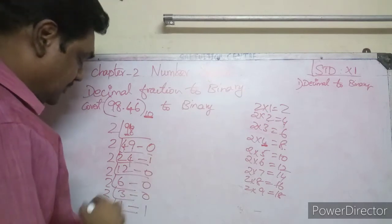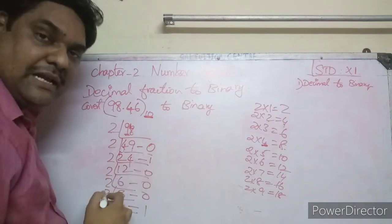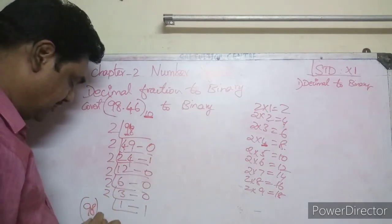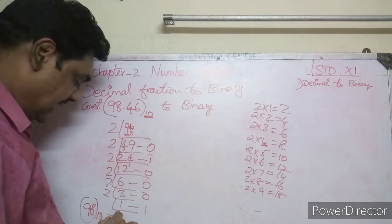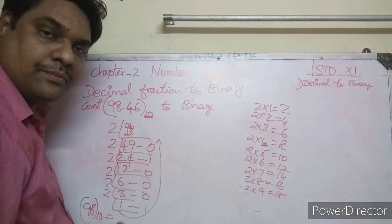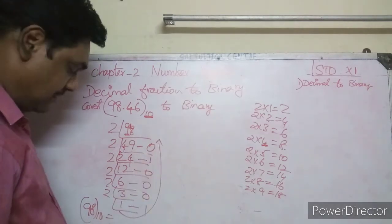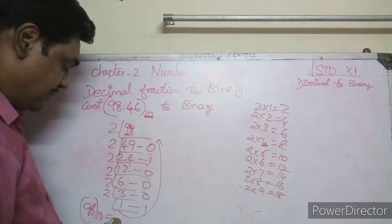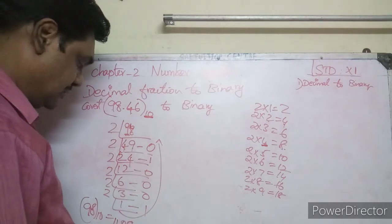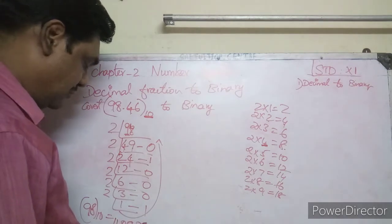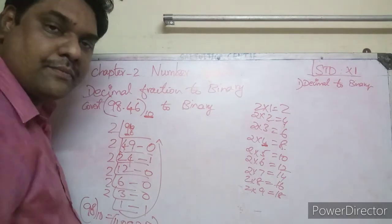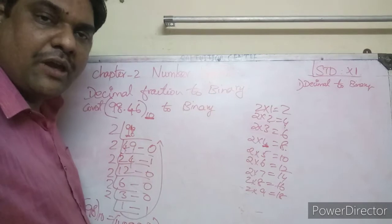So for 98 base 10, the binary integer part is 1100010. That gives us the left side of the binary point.